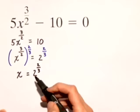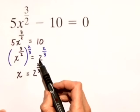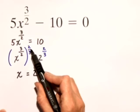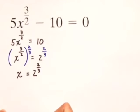Now, when we raised both sides to the 2 thirds power, we were really taking the cube root and then squaring. That's what rational exponents do.